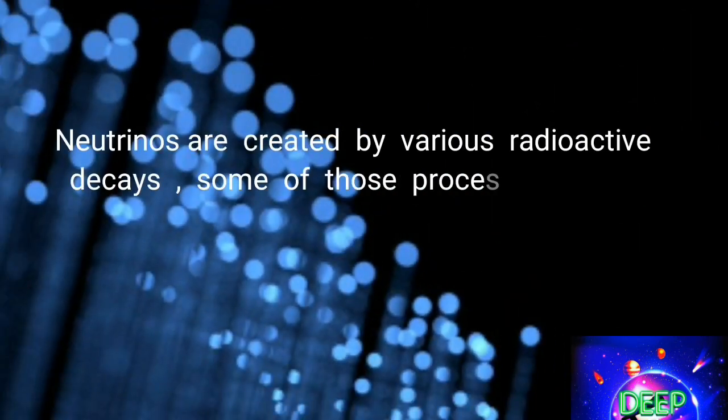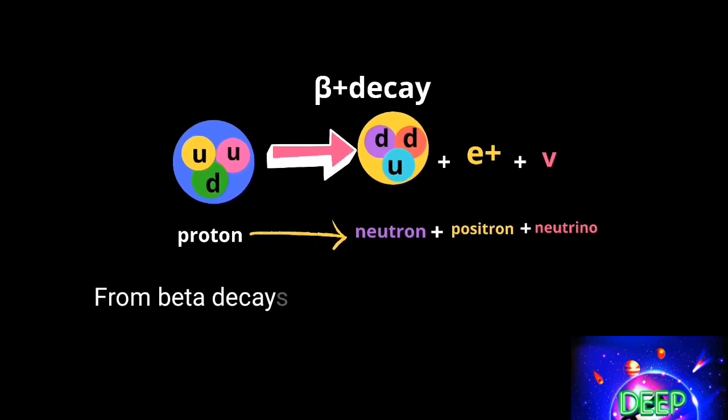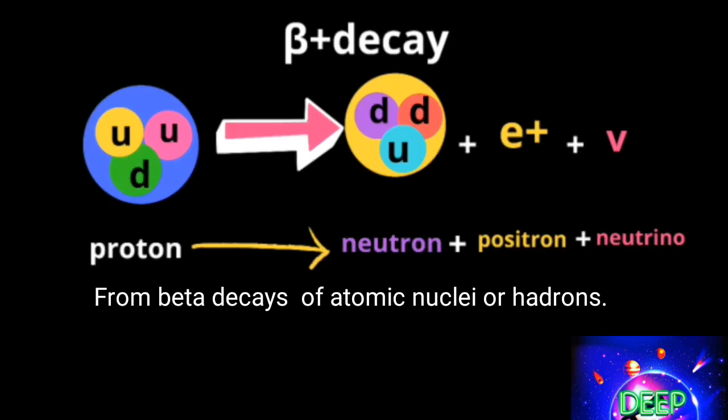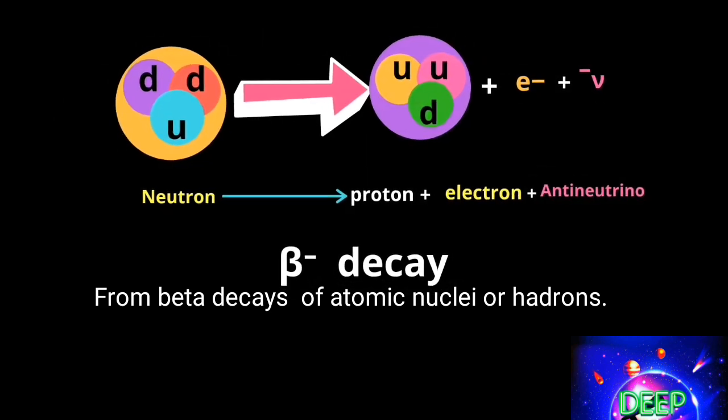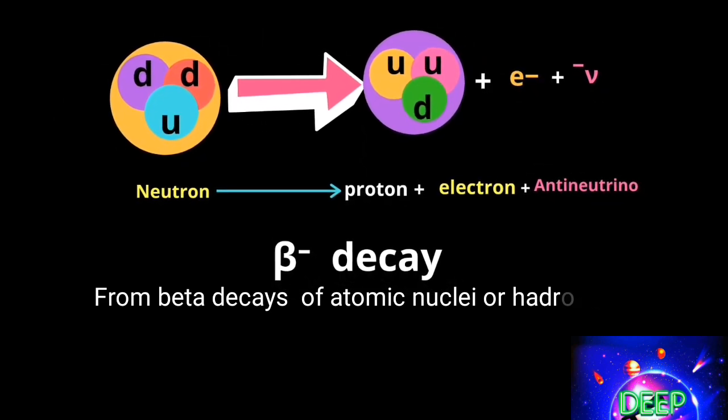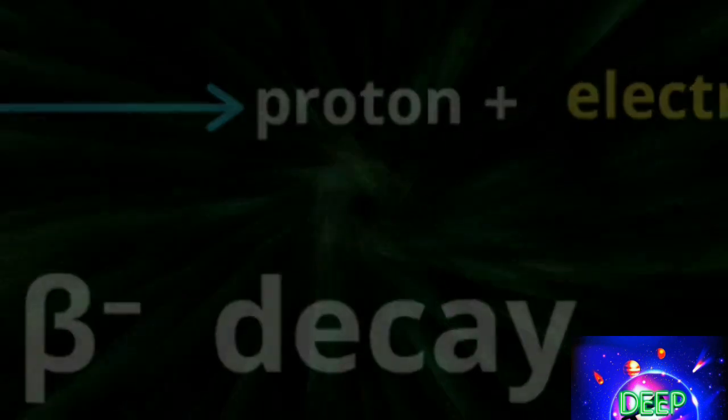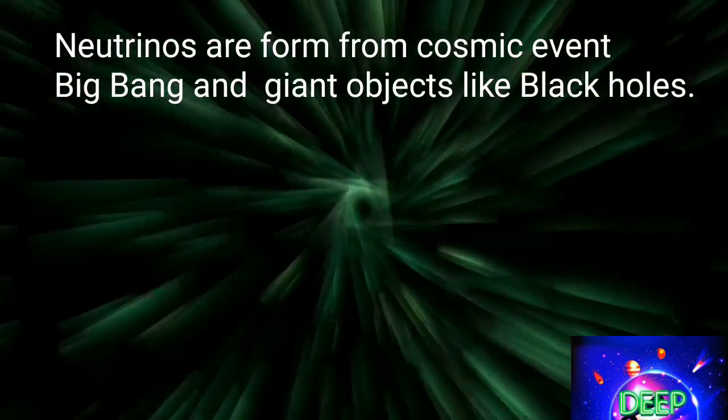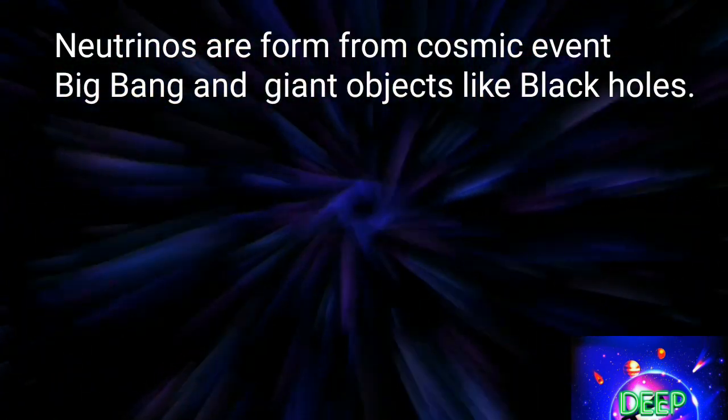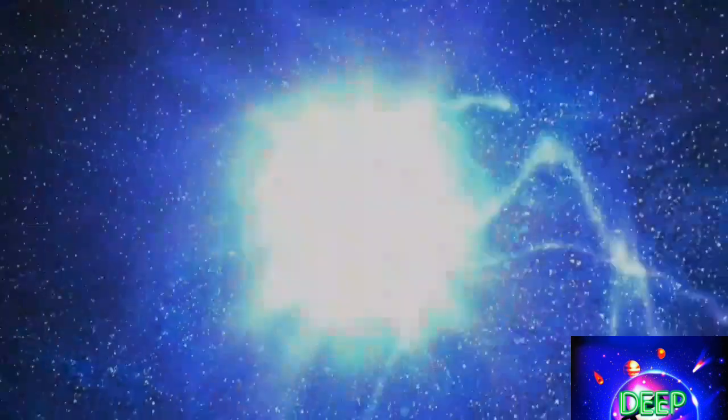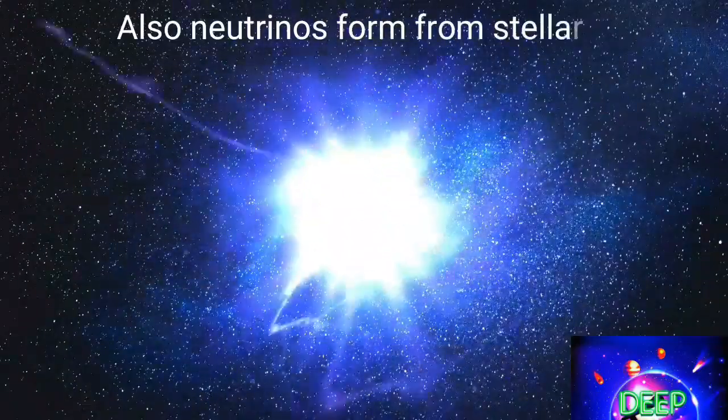Neutrinos are created by various radioactive decays, beta decay of atomic nuclei or hadrons, during the Big Bang, spinning of black holes and neutron stars, and also from supernovae.